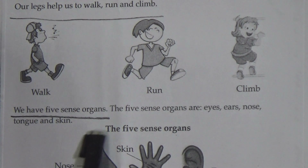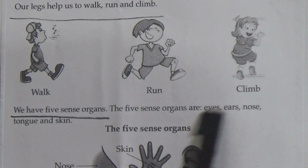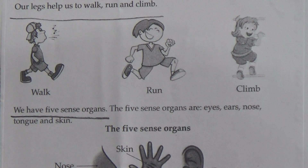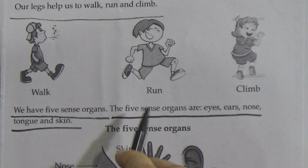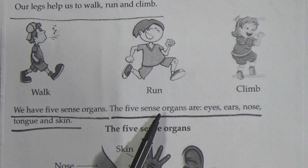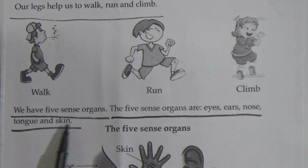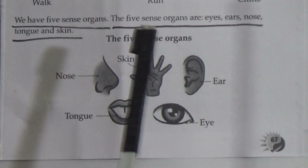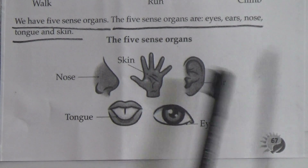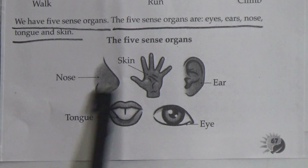We have five sense organs — underline this line, my dear students. The five sense organs are eyes, ears, nose, tongue, and skin — underline this line and memorize it. Here is a picture of the five sense organs: skin, eye, tongue, and nose.